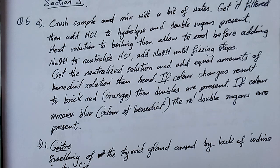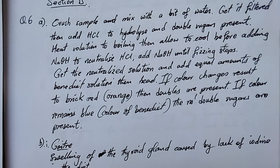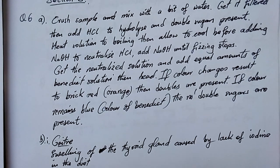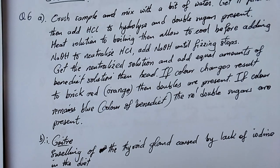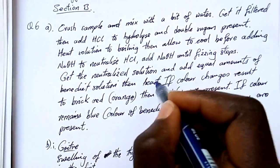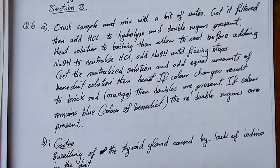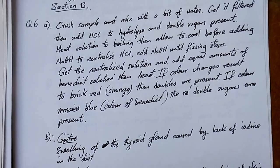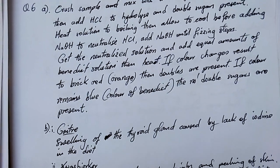Heat solution to boiling, then allow to cool before adding sodium hydroxide to neutralize the HCl. Add sodium hydroxide until fizzing stops. Get the neutralized solution and add equal amounts of Benedict's solution, then heat the solution. Observe the color changes: if color changes to brick red or orange, reducing sugars are present. If color remains blue — the color of Benedict's — no double sugars are present.